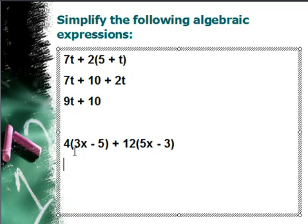So what's going to happen is I'm going to distribute 4 to 3x, that's going to be 12x. And then I'm taking away 4 given to 5, that's going to be 20. And then I'm going to add 12 given to 5x, that's going to be 60x. And then I'm taking away from that, 12 given to 3, that's 36.